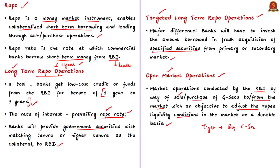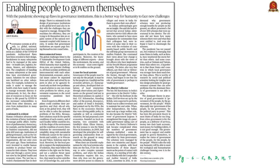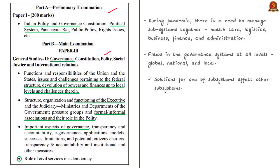Now let's move on to the next news article. This editorial is about fundamental flaws in governance and the importance of local governance. The syllabus relevant to this analysis is highlighted for your reference. In the current scenario of the COVID-19 pandemic, there is a need to manage various subsystems like healthcare, logistics, finance, and administration. This has revealed flaws in governance systems at all levels — from global to national, national to state, and state to local levels.